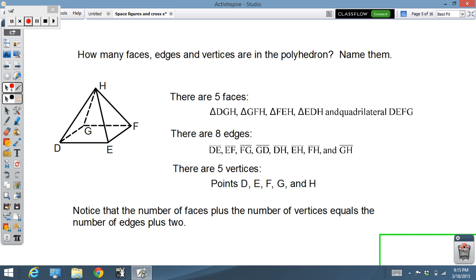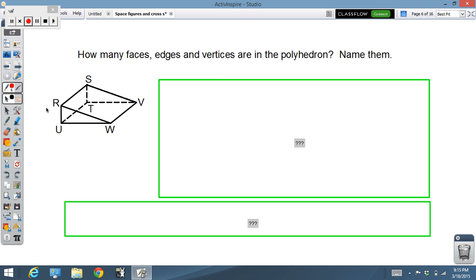Now, I want you to notice something. The number of faces plus the number of vertices equals the number of edges plus two. So, five faces, five vertices, that's ten. That equals eight plus two. That's going to come in handy in just a second.